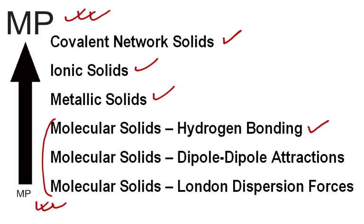molecular solids that are held together with hydrogen bonding, held together with dipole-dipole attractions, and London dispersion forces. So those are our six categories, four kinds of solids.